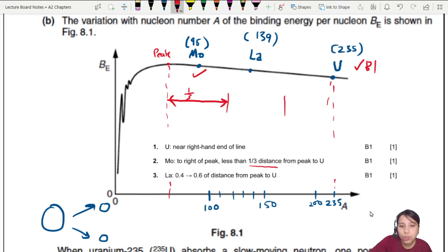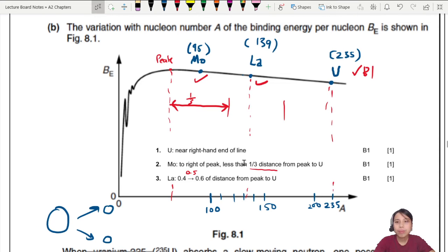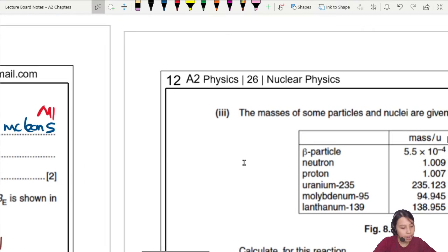Lanthanum should be 0.4 to 0.6 of distance from peak to U - around the halfway mark. So halfway is somewhere here, which is 0.5, so it's okay. We managed to hit the right spots. Just make sure you're aware of the scale. If it's 200 it's very far, if it's 100 it's near the middle. If you want to be very sure, take a ruler and divide the horizontal scale into sections, then plot your points.